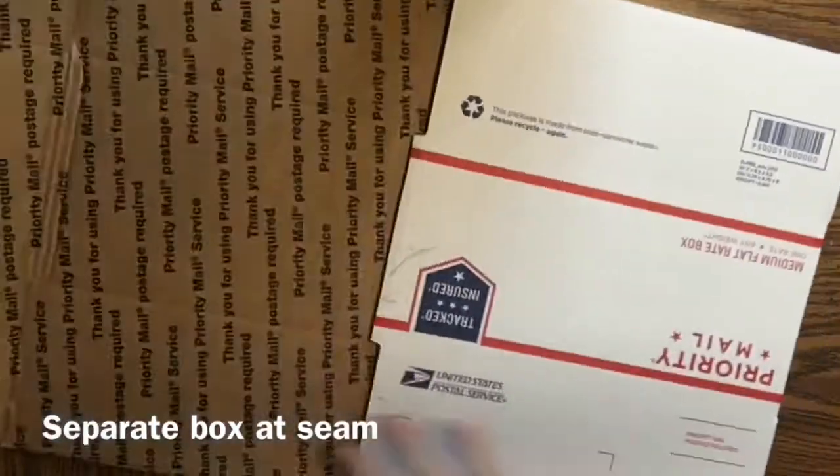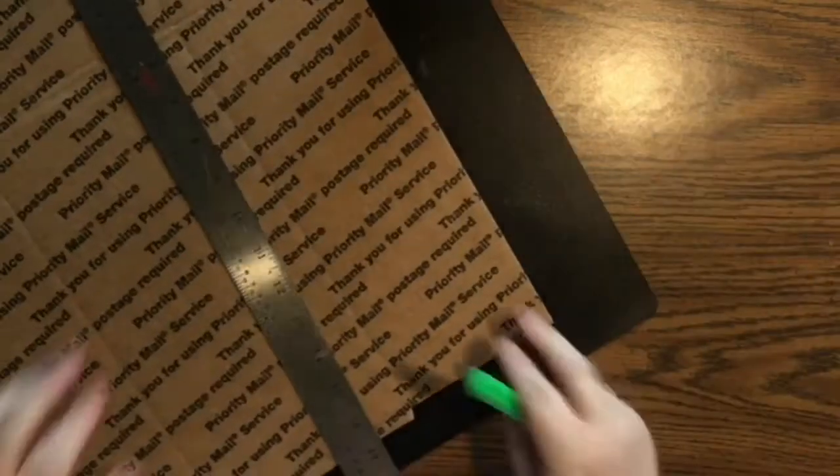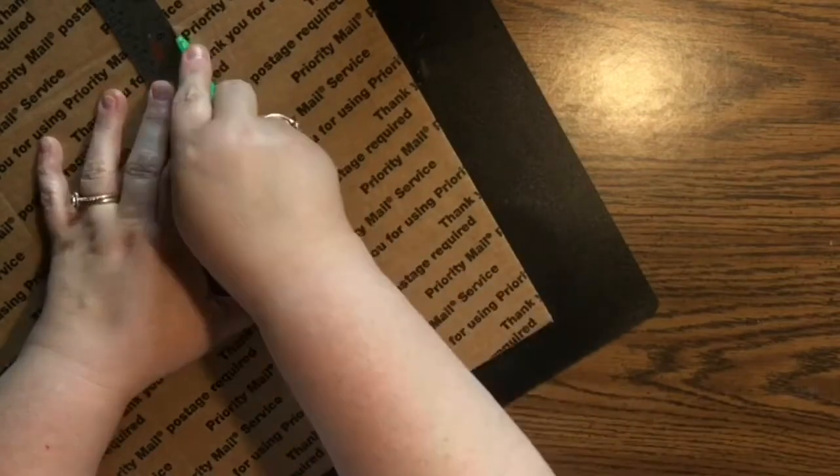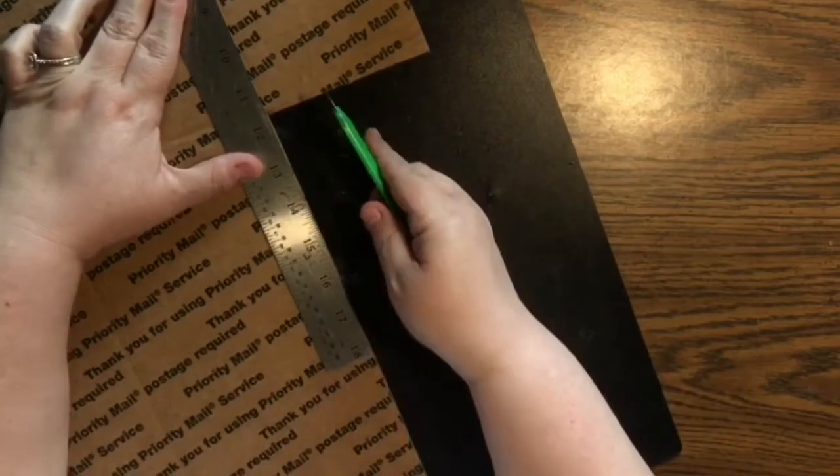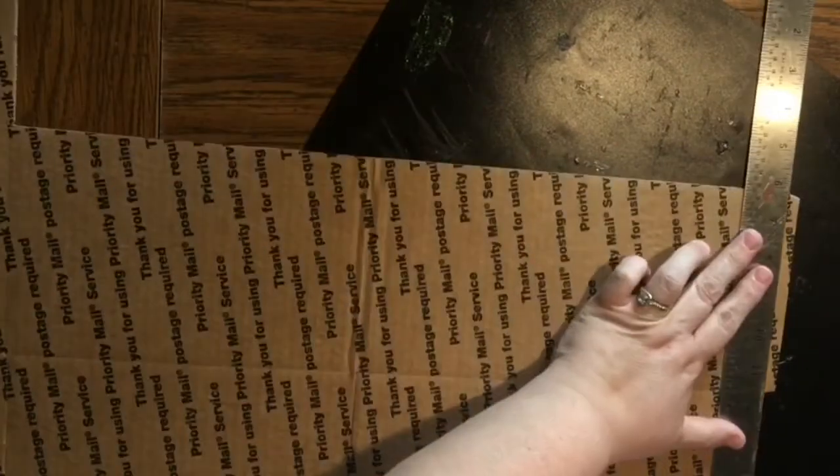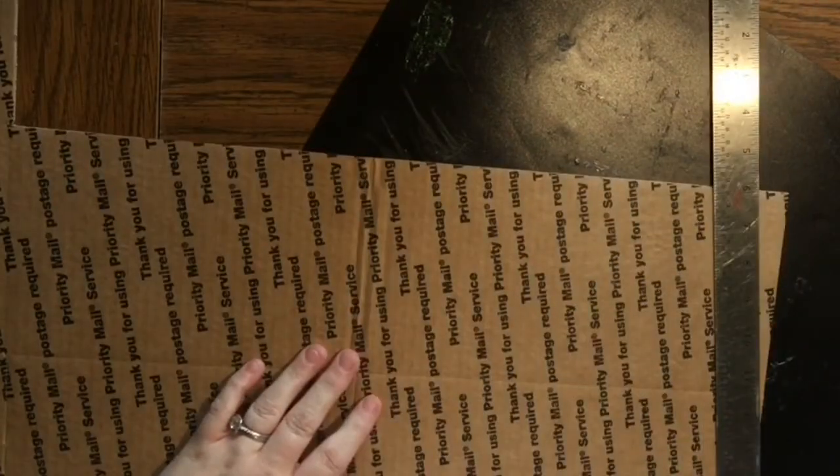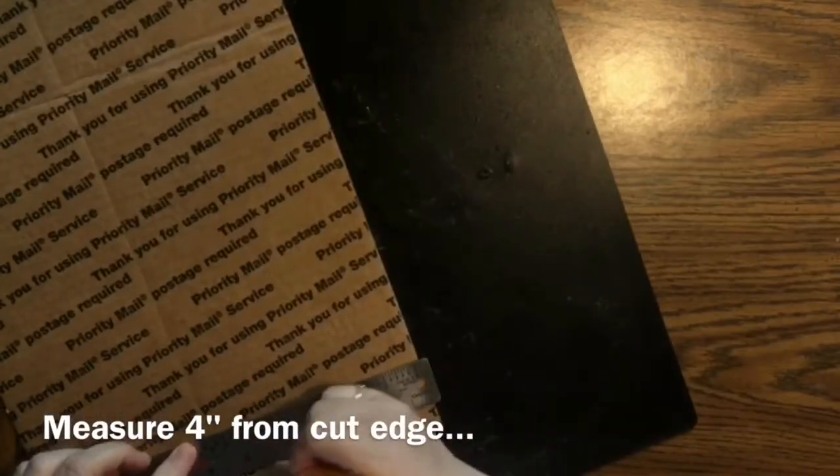First we're going to do is we're going to cut the seam open on this box just to have a big flat piece of cardboard. The first thing we're going to do is we're going to cut a piece of cardboard that's going to be four inches wide. So I'm just starting off by cutting the flaps off so that I can have a nice clean edge. And then once I have that, I'm going to measure four inches for the entire length of this board.